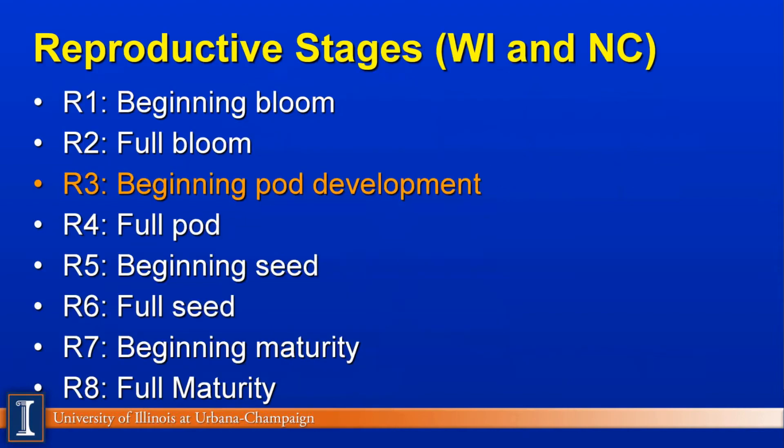You'll hear reference to the R stages, and here they are listed. We want to recognize these tables from the University of Wisconsin and North Carolina State University. R1 is beginning bloom. You'll notice that R3 would be the stage where you probably have the optimal amount of quality and quantity of forage when harvesting the soybean. Remember, these are soybeans that are being raised for seed — this is not the forage soybean, which is a different product in itself. However, with drought conditions, you may not have much control depending on your situation.